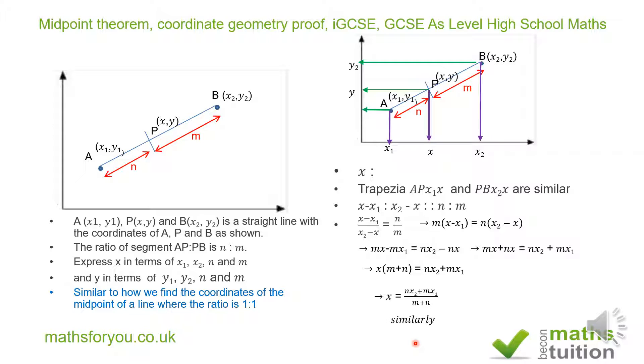Similarly, for the y axis, for the y coordinate of the point P, we can say that y is equal to ny sub 2 plus my sub 1 divided by m plus n.